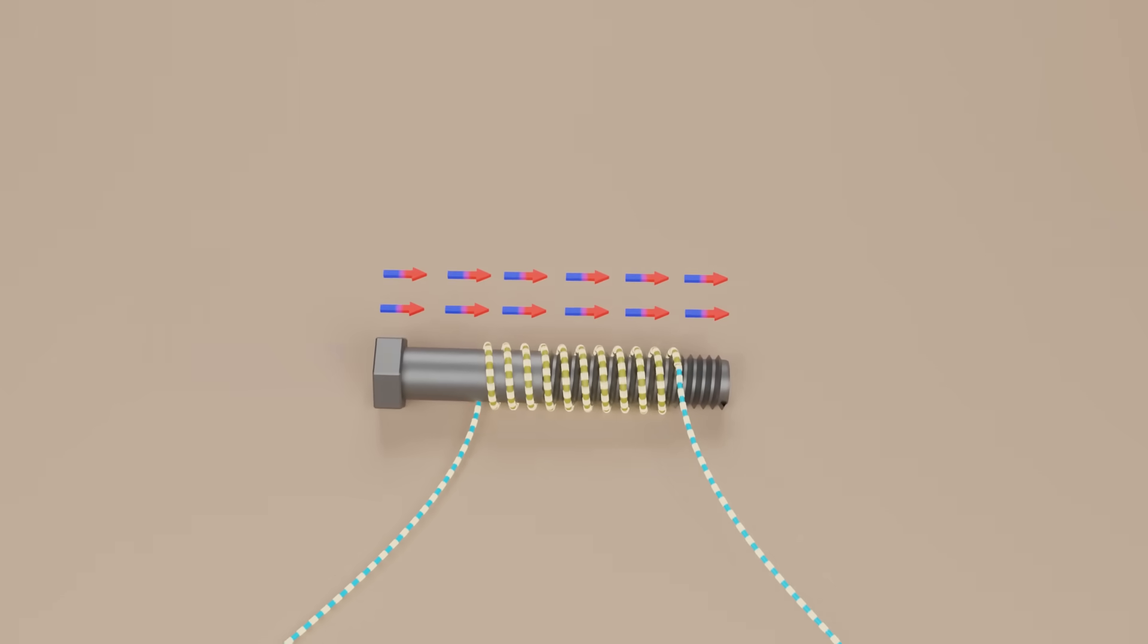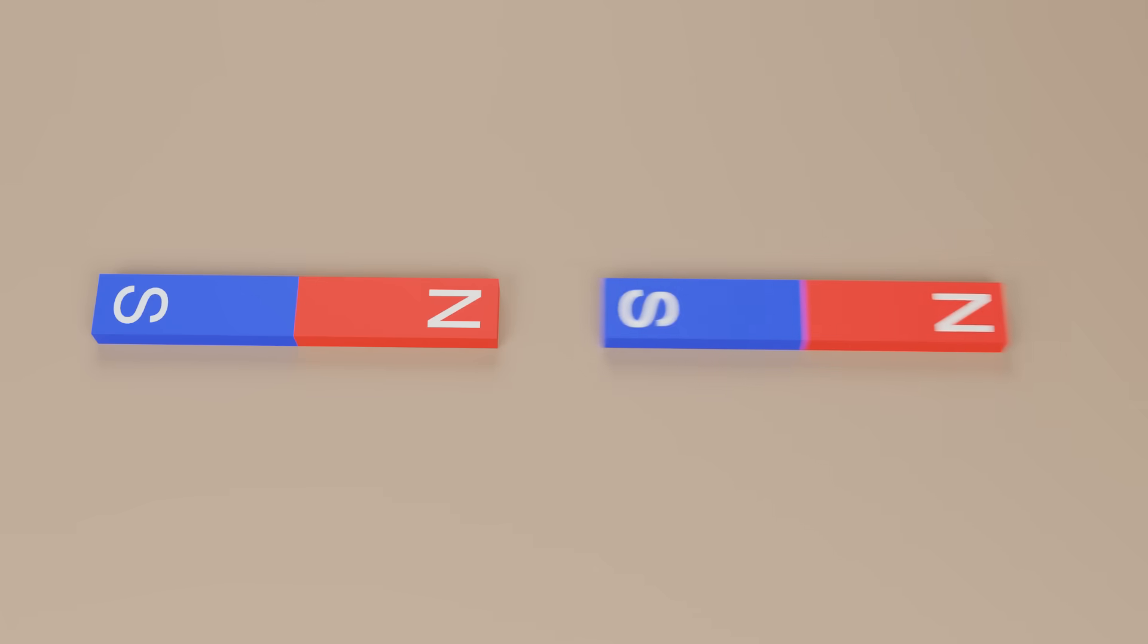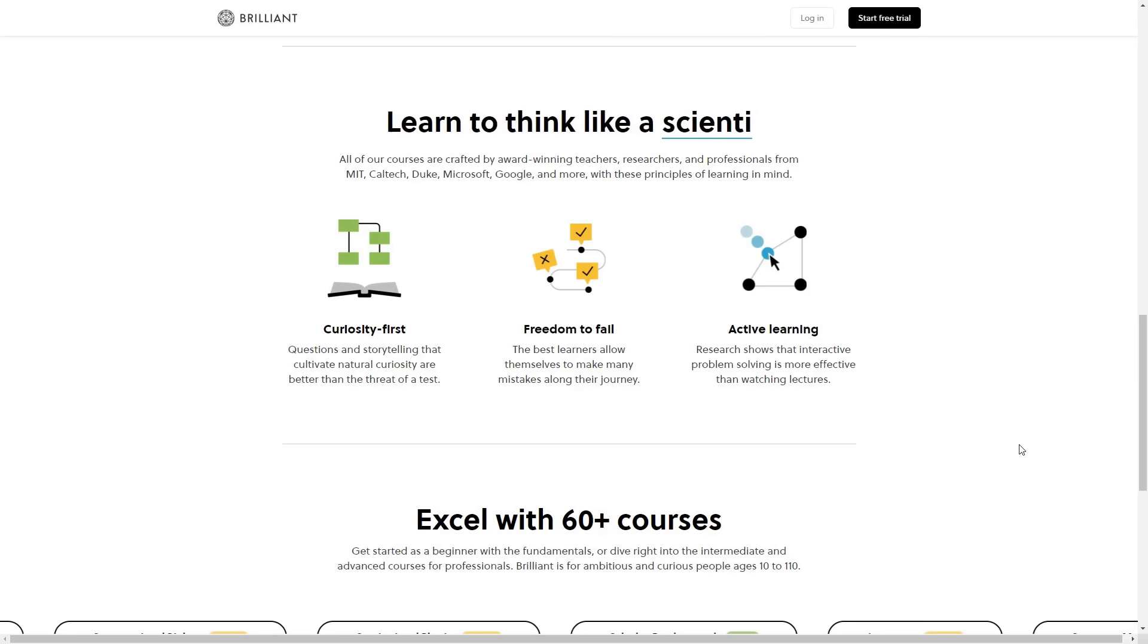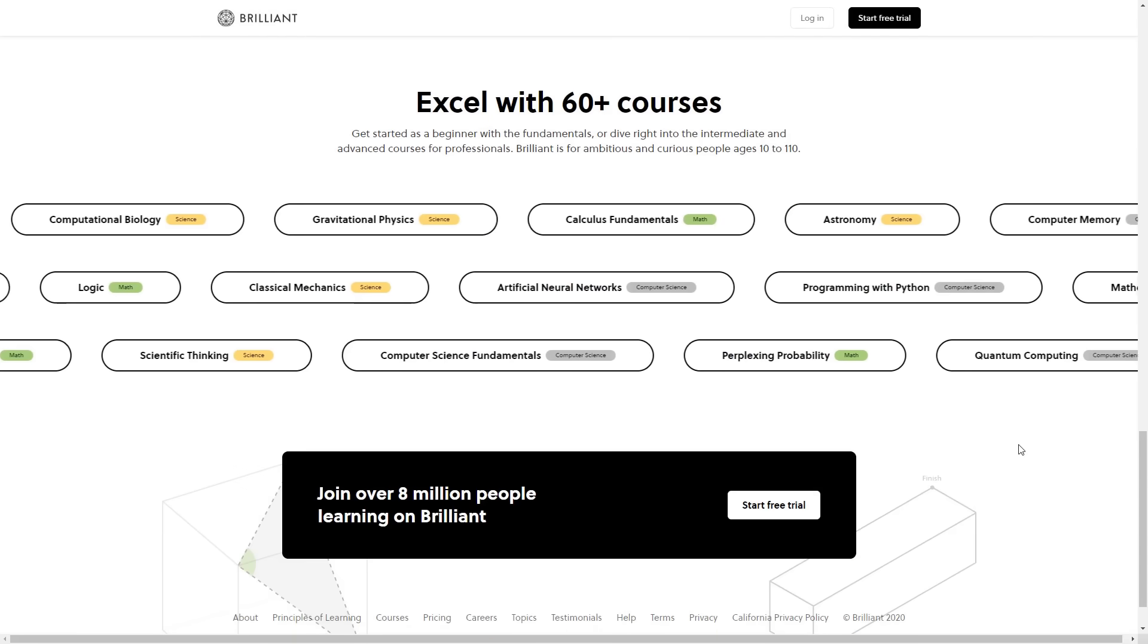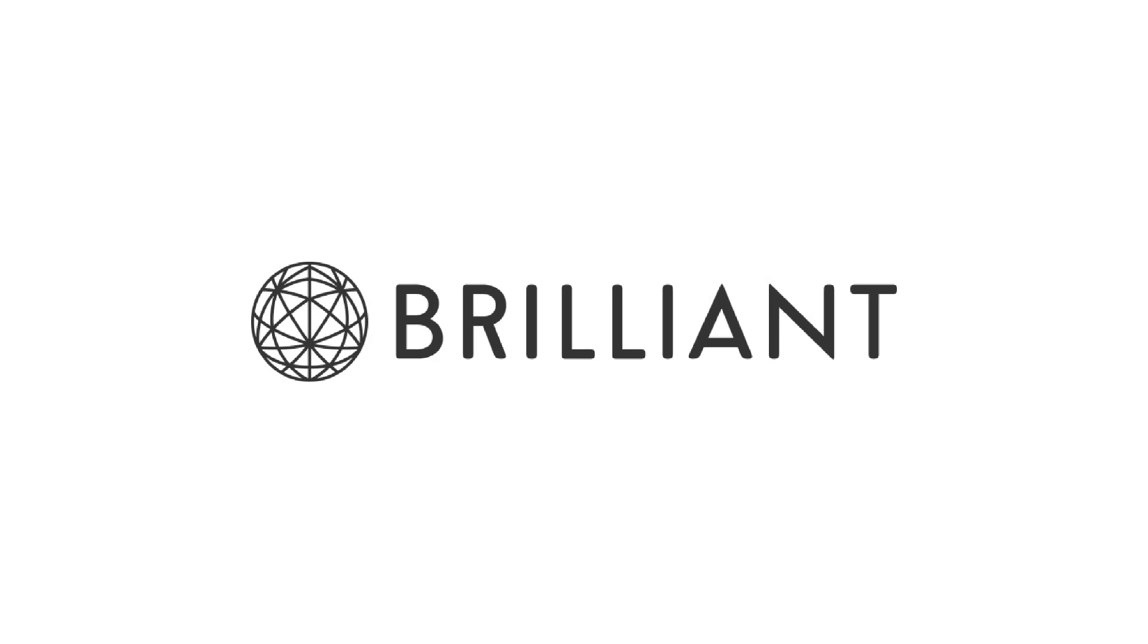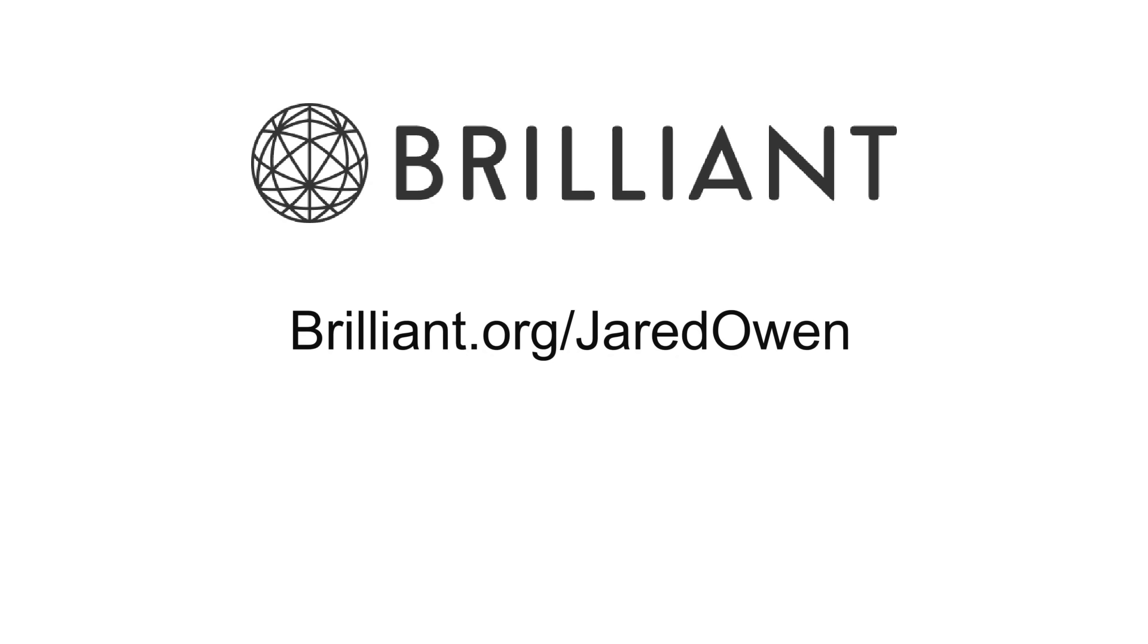Brilliant is great for anybody that is curious and likes to learn new things. Whether you're a student learning it for the first time, or a professional who wants to keep their skills sharp. Sign up for free by going to brilliant.org slash Jared Owen. The first 200 people will also get 20% off their annual premium membership.